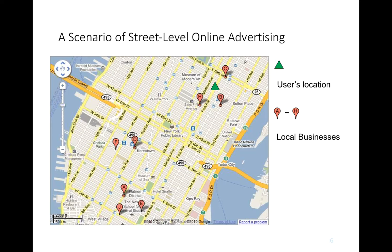Here is a picture of Midtown Manhattan, where there are many different businesses that all provide a certain service. Say the user is this green triangle searching for donut shops, and advertisers wish to provide advertisements for their business. There may be literally hundreds of different donut shops within a 35-kilometer radius. So the advertiser would love to have street-level geolocation to make an advertisement for a specific nearby donut shop pop up on the user's device.